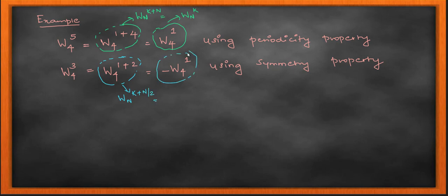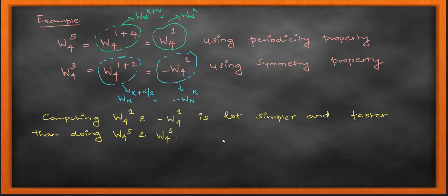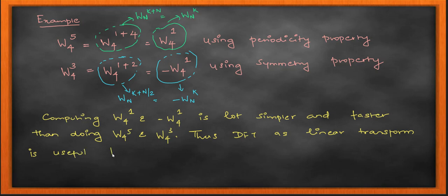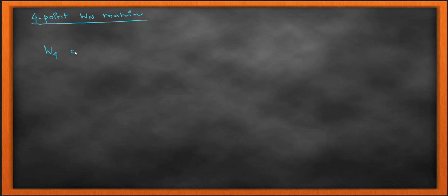Using these properties, any DFT computation becomes a lot easier — even writing a program becomes simpler. Whenever I get any power value greater than N, I can simplify it using the periodicity notation. Computing W to the power of 1 is exponentially faster than W to the power of 5. This is why the W substitution is widely used in the fast Fourier transform, which we will see in coming lectures.